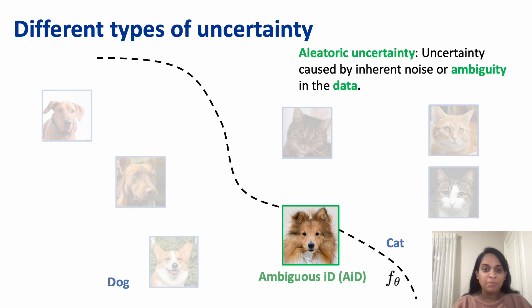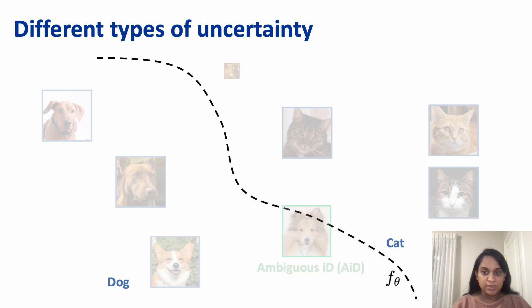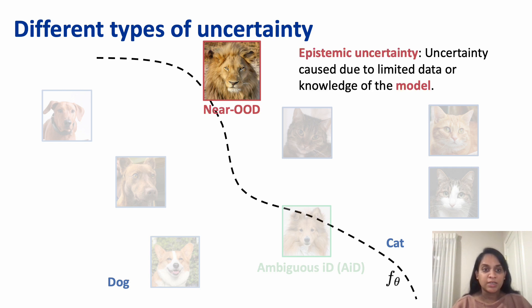We call them ambiguous in-distribution samples. Here is another test image of a lion. It is an out-of-distribution sample as training distribution only consists of cats and dogs. But it looks visually similar to them. Such samples have high epistemic uncertainty.